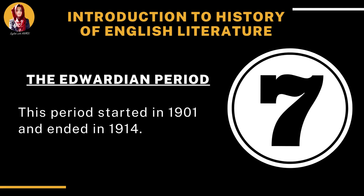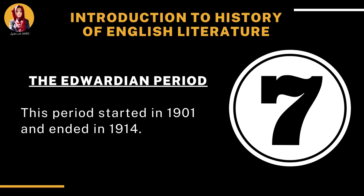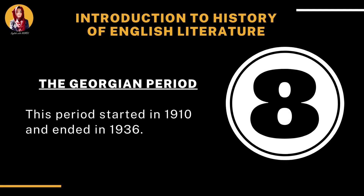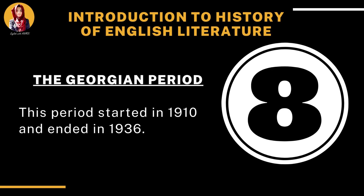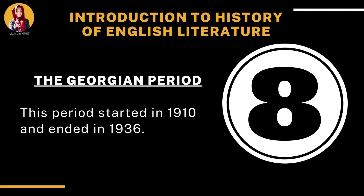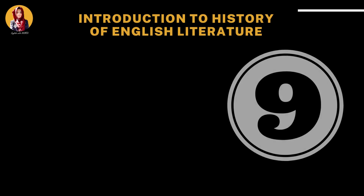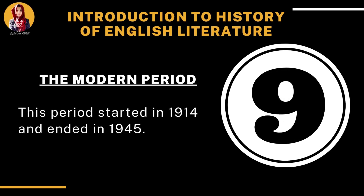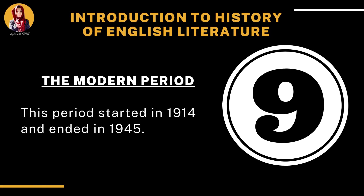The seventh period is called the Edwardian period. This period started in 1901 and ended in 1914. The eighth period is called the Georgian period, starting in 1910 and ending in 1936. The ninth period is called the Modern period, starting in 1914 and ending in 1945.